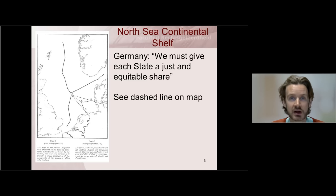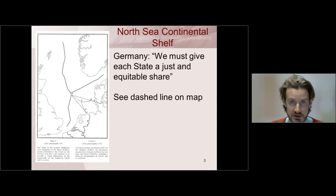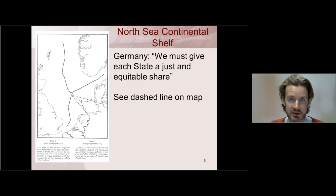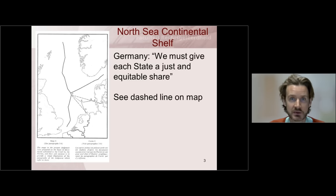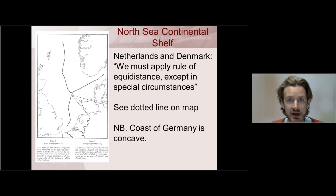The dashed line is reflective of the German position. Germany basically suggested that the court should grant to each state a just and equitable share of the continental shelf, which means the court was asked to divide the continental shelf equally so that each of the states gets an equal share of the pie, so to speak.